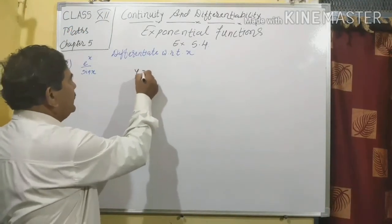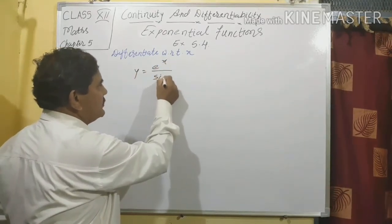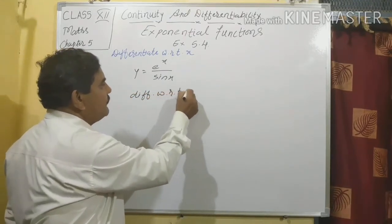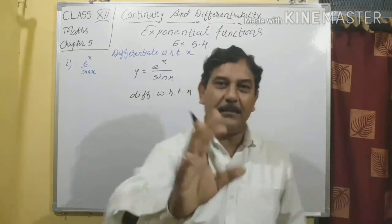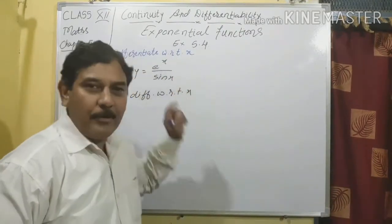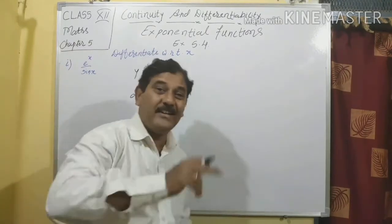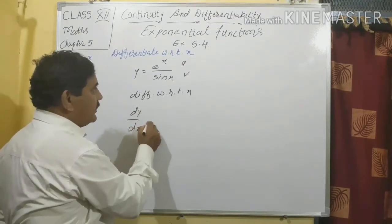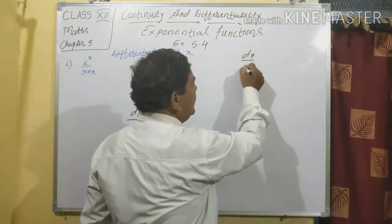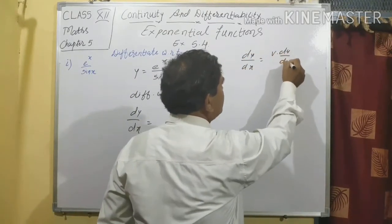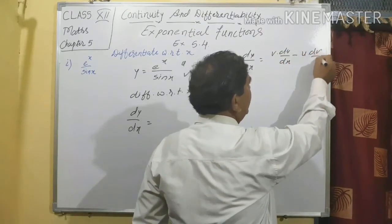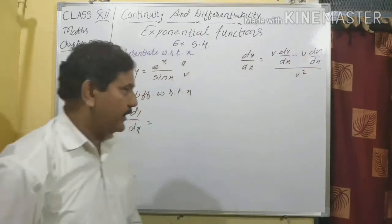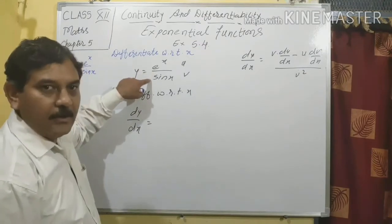Question number 1: y = e^x / sin(x). We have to differentiate with respect to x. This is the u/v form, so we use the quotient rule. dy/dx = [v · du/dx − u · dv/dx] / v².